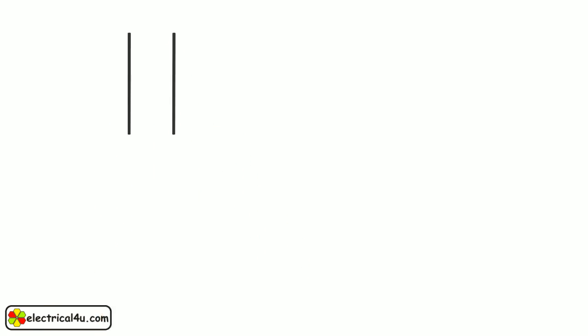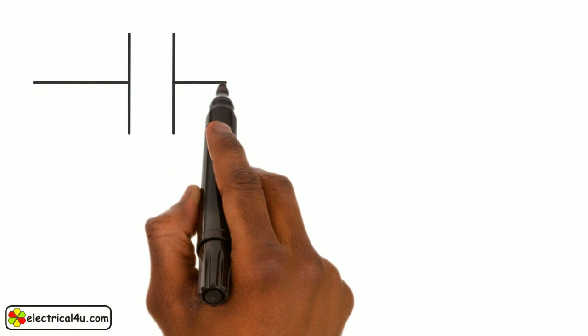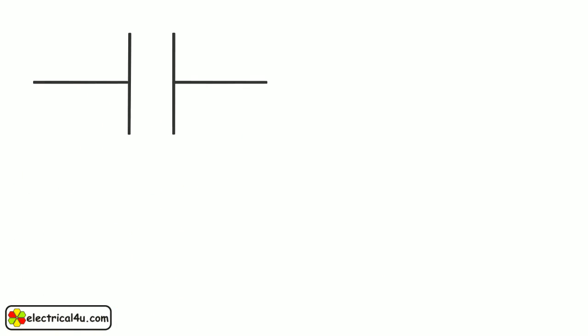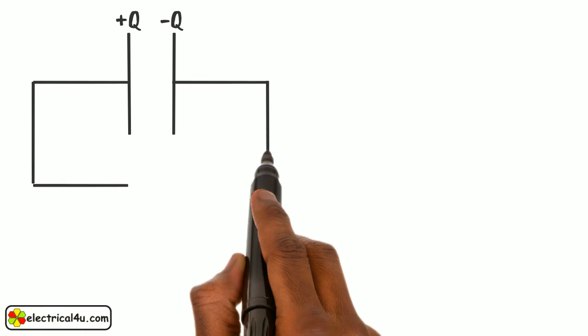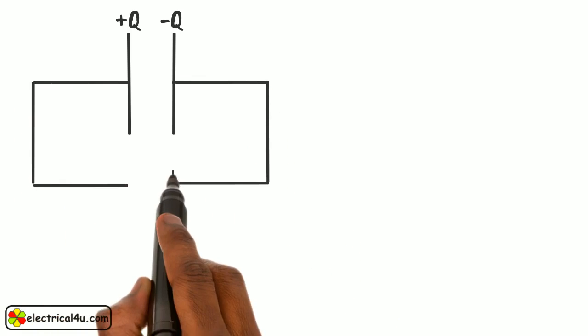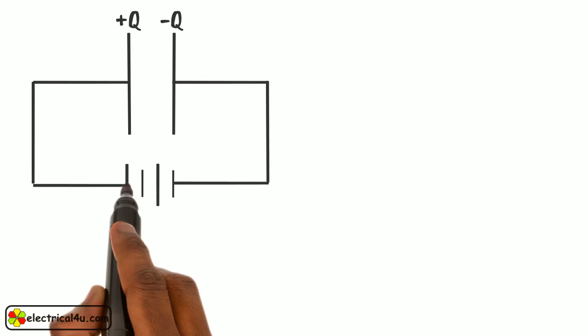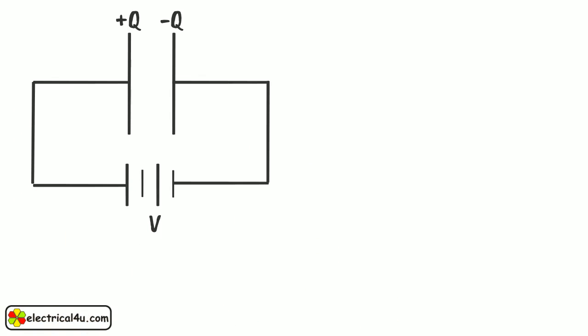Let us consider a parallel plate capacitor. The capacitor is having charge plus Q and minus Q on the two plates. Voltage V is applied to the plates. Then the capacitance C is given as Q by V.